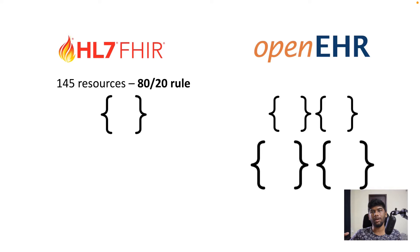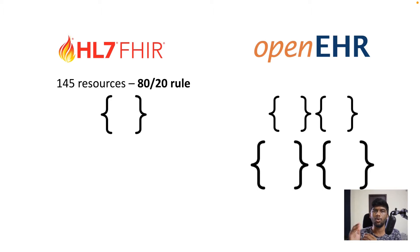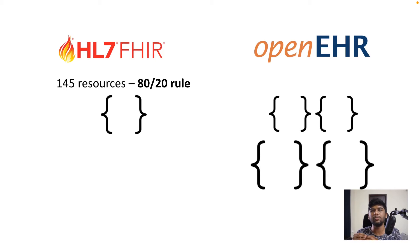Since FHIR only handles 80% of the use case, the remaining modeling task is left to implementers — they have to profile FHIR using an implementation guide before it can be used in real life. For example, the US has the US Core FHIR profile, India has the Indian NRCES FHIR profile. Every country using FHIR has its own profile, and these profiles are not interoperable with each other. FHIR as a standard never defined how to capture something as simple as blood pressure, so each country invented its own version.